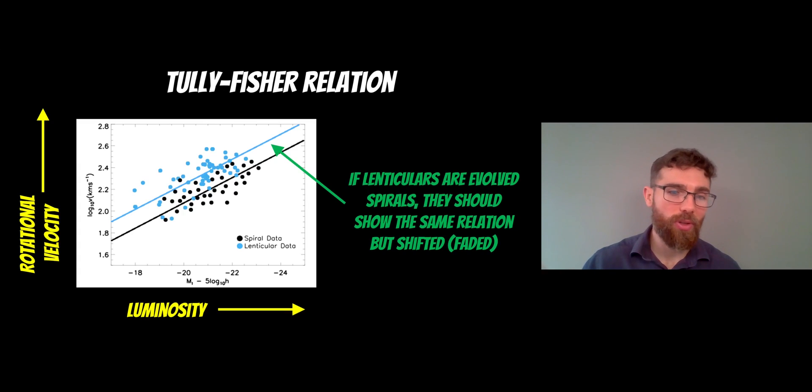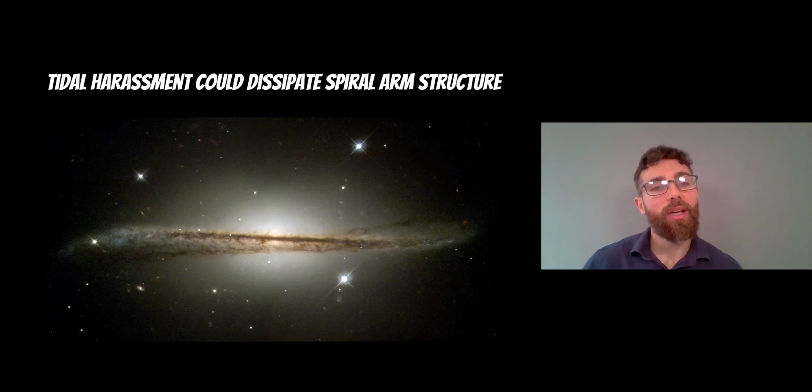You've got two sets of data there. One is the spiral galaxies. One is the lenticular one. And you can see that actually the blue line is a bit further up, which means that it's shifted to a lower luminosity because the way it works, the lower the number, the higher the luminosity or the magnitude, I should say. So if there were faded spiral galaxies, it should show exactly the same, but it will be shifted on the plot, which is what's seen here with the Tully-Fisher relation.